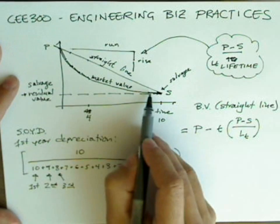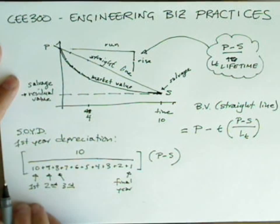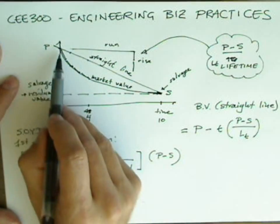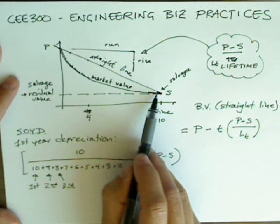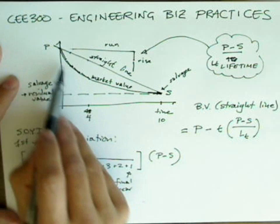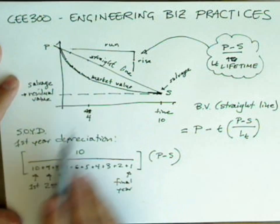Well, it depends upon how many years, but it's going to be much flatter than it is in the first year. As a matter of fact, the first year will be 10 times, in this example, 10 times as steep as the last year. So sum of the years digits gives us an approximation of a curve.